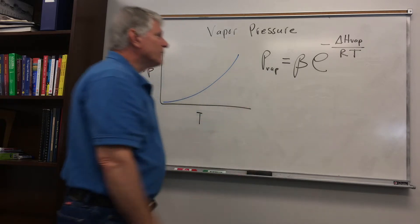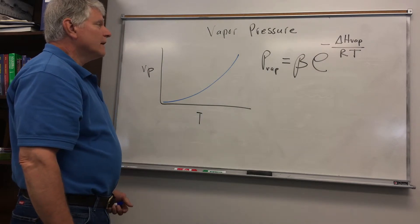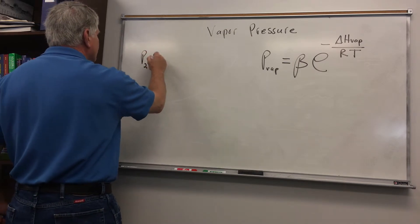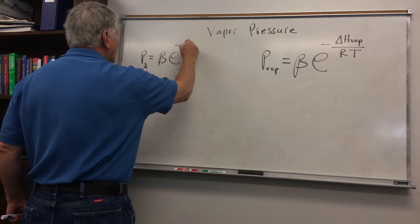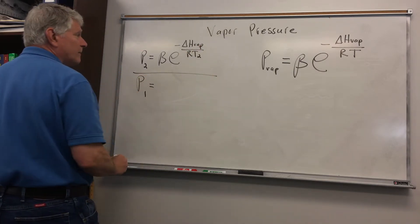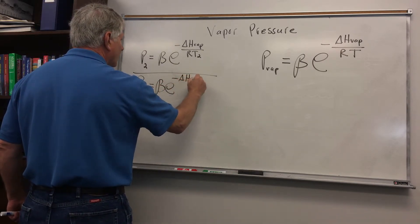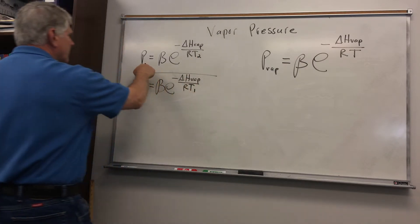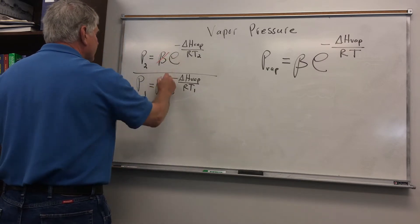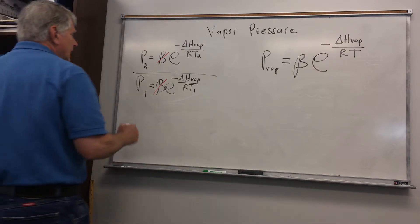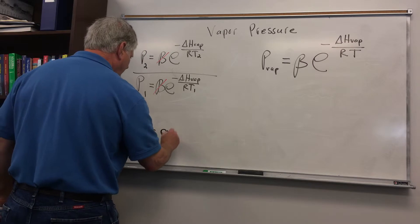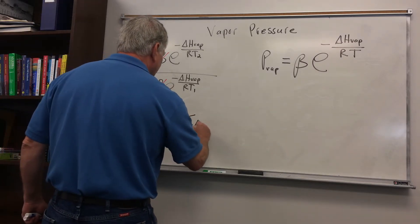A more convenient form of this equation is to take a ratio at two different temperatures. We take the ratio of the equation at temperature 2 divided by the vapor pressure at temperature 1. The constant beta will cancel, so we don't have to worry about the proportionality constant. Combining the exponentials and factoring out negative delta H vaporization over R gives us a convenient form of the equation.